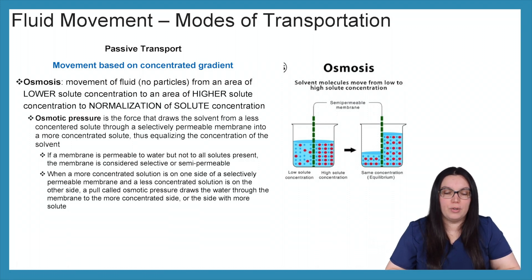If the membrane is permeable to water but not all solutes present, the membrane is considered a selective or semi-permeable membrane. When a more concentrated solution is on one side of a selectively permeable membrane and a less concentrated solution is on the other side, a pull called osmotic pressure draws the water through the membrane to the more concentrated side, or the side with more solutes, as you can see from the picture above.